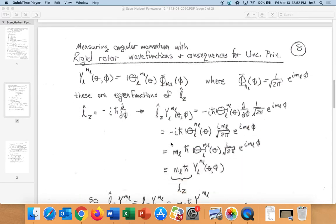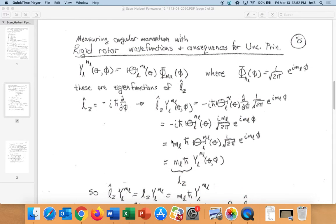More important for today: measuring angular momentum with the rigid rotor wave functions, and what this means for the uncertainty principle. So here's our eigenfunction for the rigid rotor, and here's just the phi dependence.